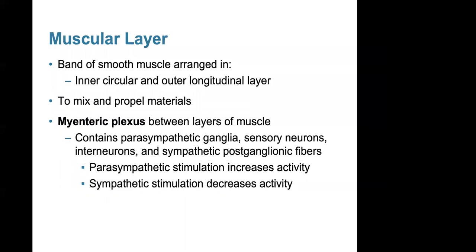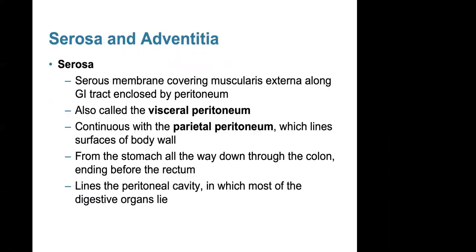The muscularis layer is a band of smooth muscle arranged in an inner circular and outer longitudinal layer. It is involved in mixing and propelling materials. The myenteric plexus is located between the layers of muscle and contains parasympathetic ganglia, sensory neurons, interneurons, and sympathetic postganglionic fibers. Both parasympathetic and sympathetic stimulation regulate the activity of the muscular layer.